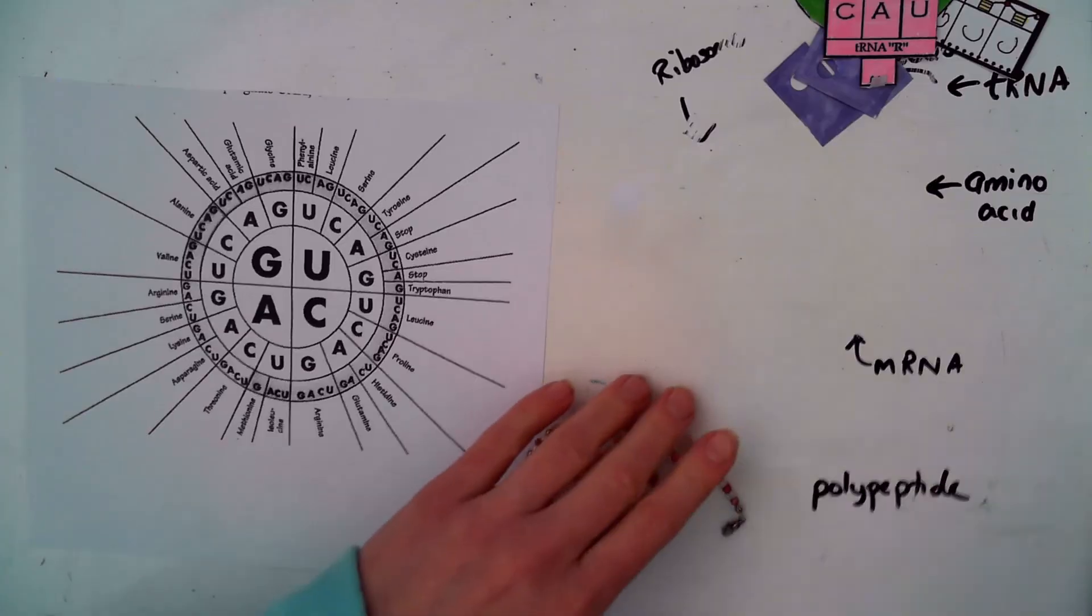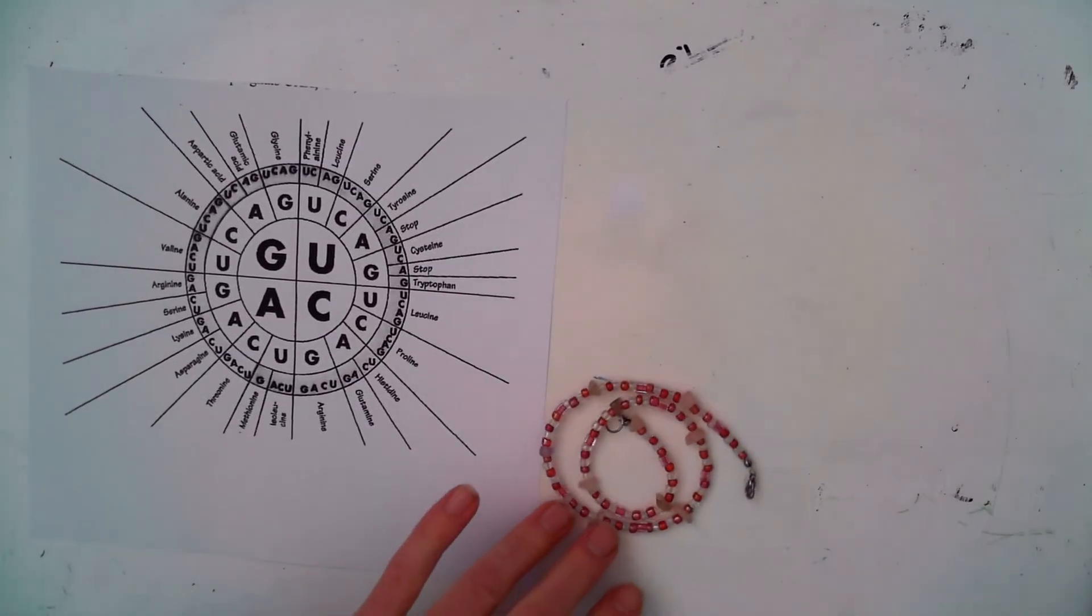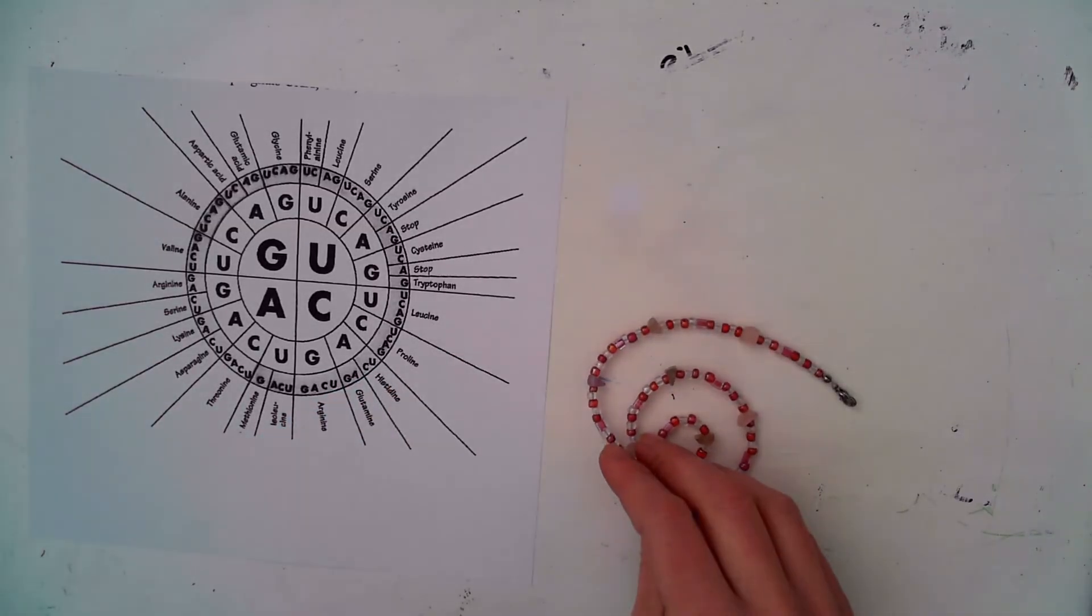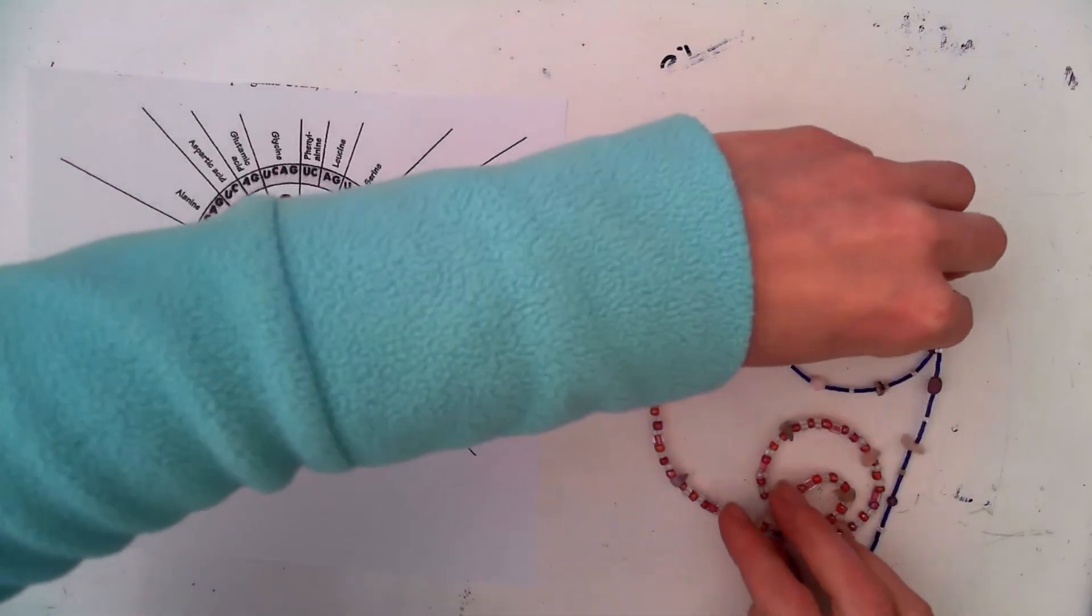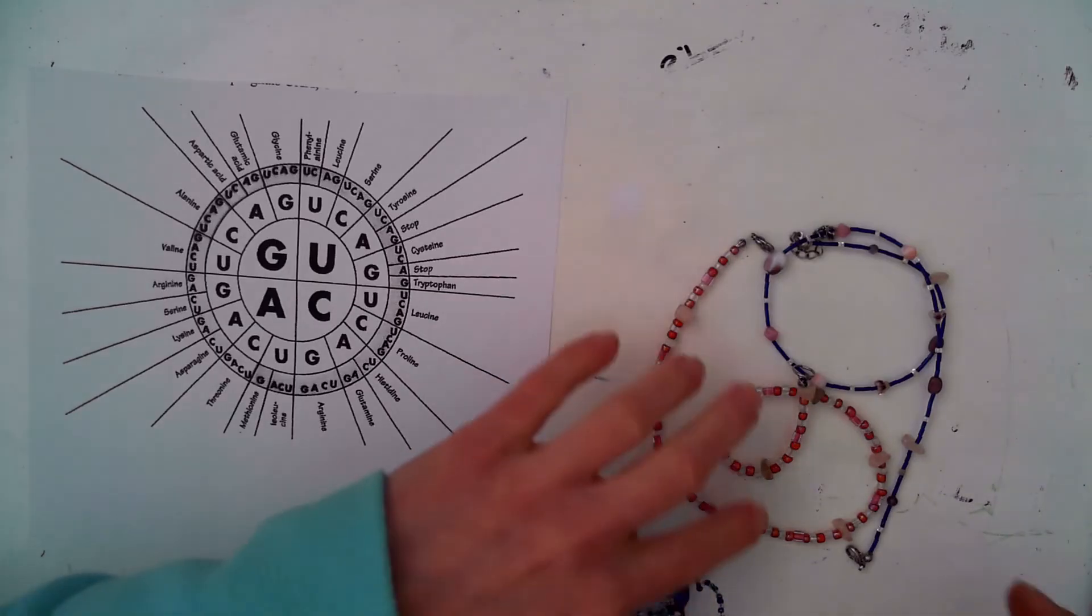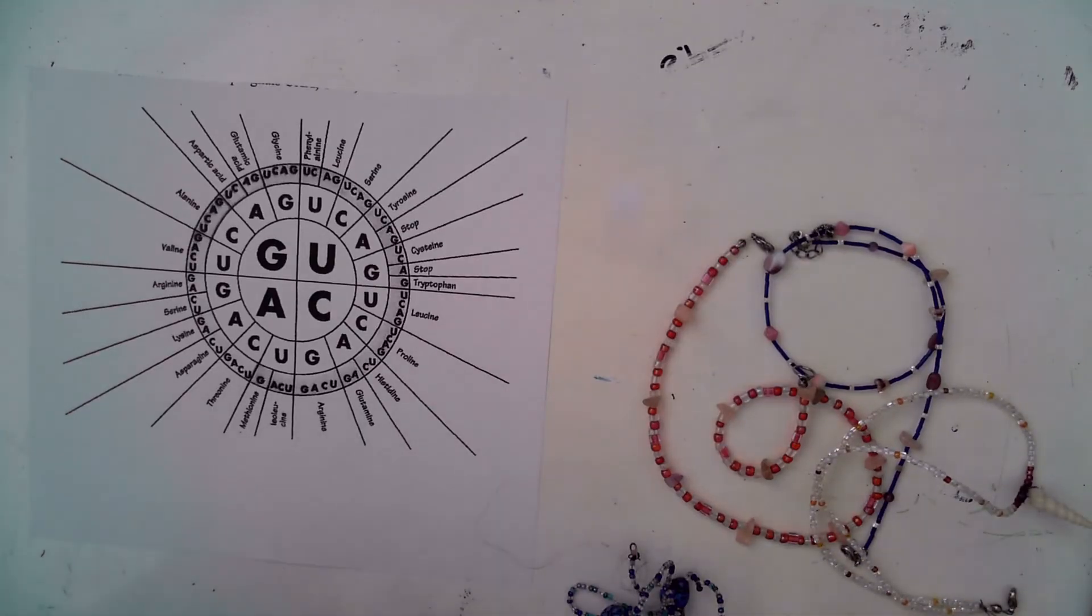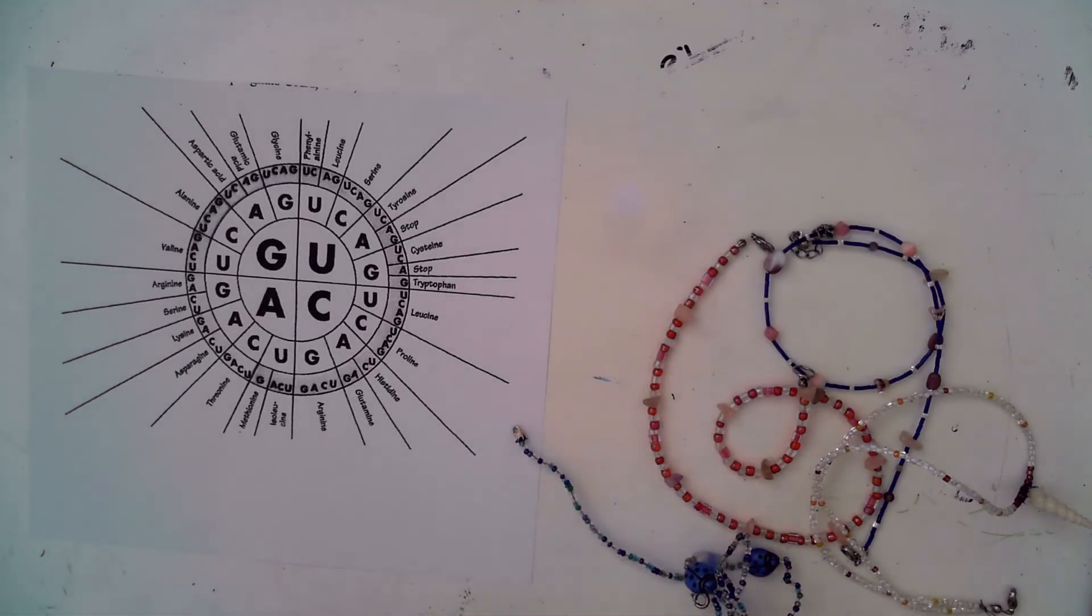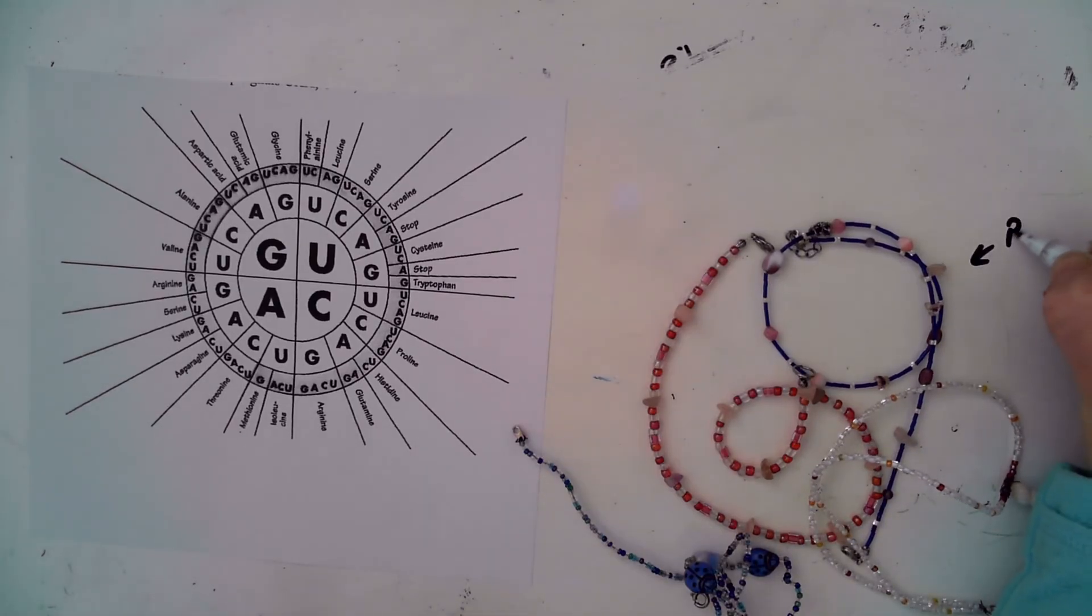And then so you have one complex folded twisted polypeptide. And then we have another complex twisted polypeptide. And those are all, you actually end up with four. Now, these are just necklaces that I had made a long time ago. Really, they should all be made out of the same 20 beads. But this is just what I had available. So when you have four polypeptide chains that have been twisted to their appropriate shapes and folded, they then attach to each other. And that, in the end, is what we call a protein.